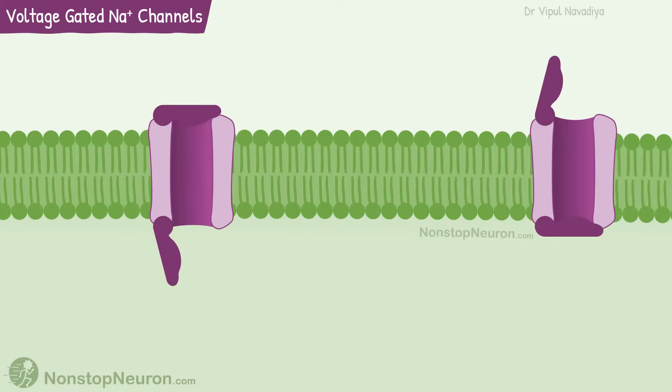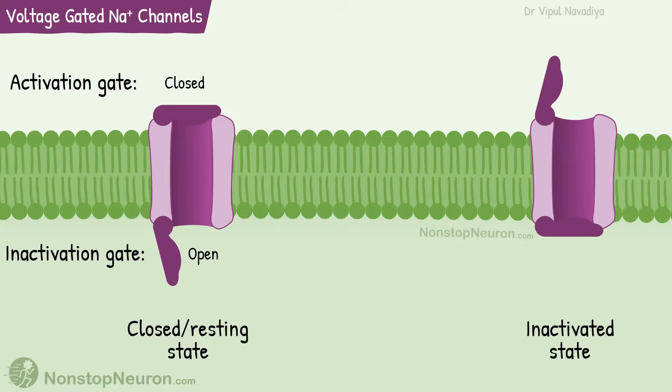Because of this, sodium channels have two closed configurations. In a resting or closed state, the activation gate is closed and the inactivation gate is open. Whereas in an inactivated state, the activation gate is open but the inactivation gate is closed. In both these states, ions cannot move through the channel.